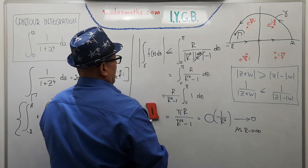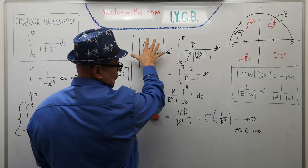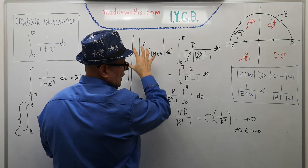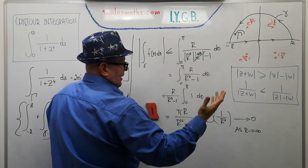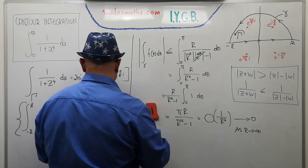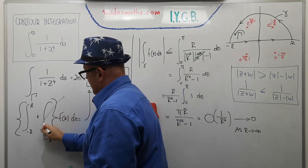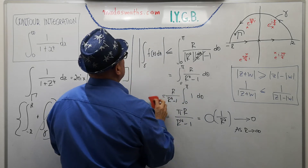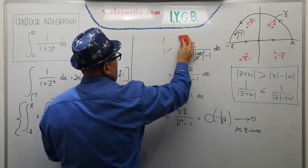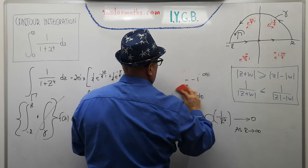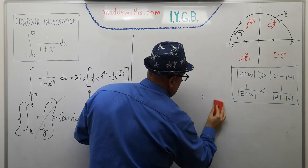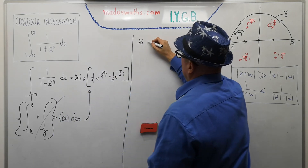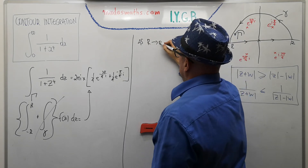So we've shown that the arc integral is less than or equal to zero in the limiting case as r → ∞, meaning it has zero contribution. All we need to do now is wrap the answer up. As r → ∞, the only contribution comes from the straight line segment along the x-axis, going from −∞ to +∞.